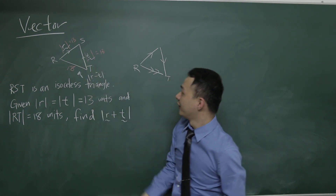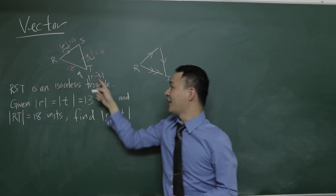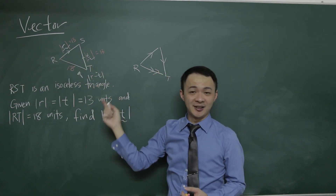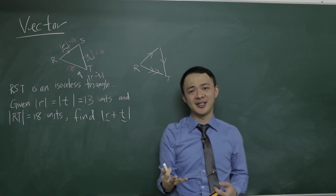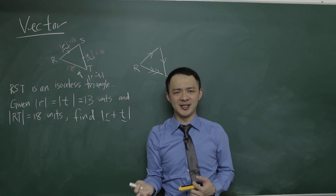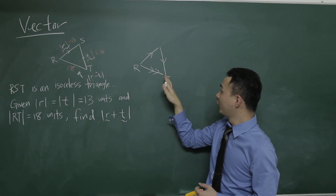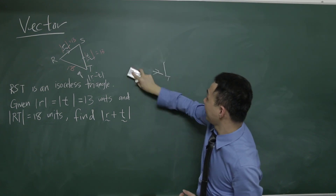So vector RT is R minus T, not R plus T. Then where is R plus T? We need to solve out this triangle in order to get R plus T.